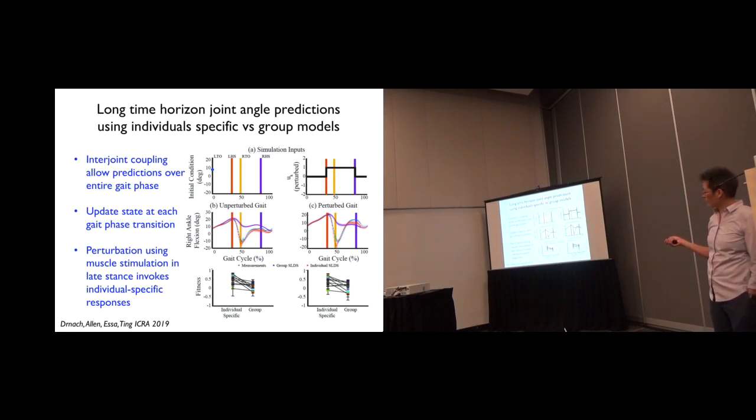And you can actually take these models and do long time horizon predictions of joint angles, where now once we've learned the models, we take the gait transitions times over a gait cycle, and we give the model the pose at each of those four time points. And what we can do is simulate the trajectory of each joint angle between the two during that gait phase, and we update it with information and we simulate that. So you can see here, these two trajectories are data plus our individual specific model, and this other trajectory is the one predicted off of a group model. So this really highlights that you really need to have an individual specific model.